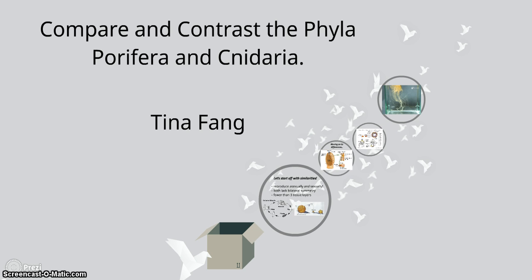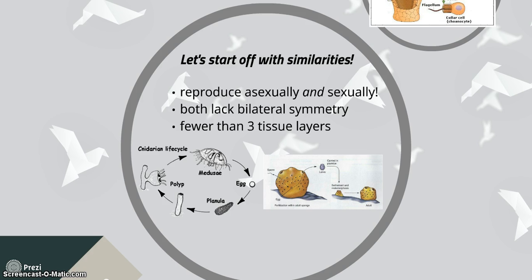Let's start off by talking about their similarities. Hydras and sponges can both reproduce asexually and sexually. Both of them lack bilateral symmetry. Sponges are asymmetrical, while cnidaria have radial symmetry. All of them have fewer than three layers of tissue. Cnidarians have two layers of tissue, while sponges don't have true tissue.